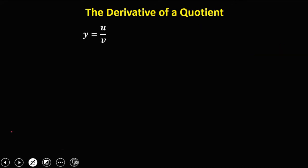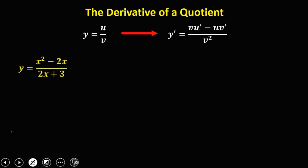For the derivative of a quotient, y equals u over v, the formula is: y prime equals (v times u prime minus u times v prime) over v squared. Given y equals (x squared minus 2x) over (2x plus 3), identify the components: u equals x squared minus 2x, so u prime equals 2x minus 2. v equals 2x plus 3, so v prime equals 2.